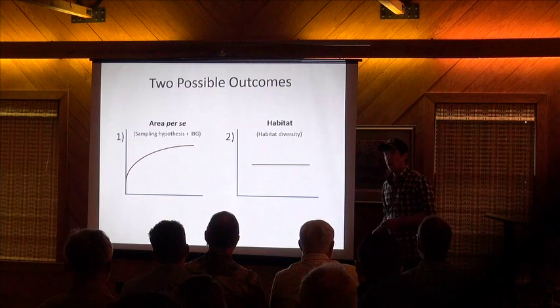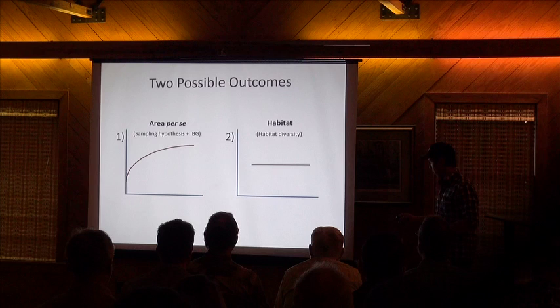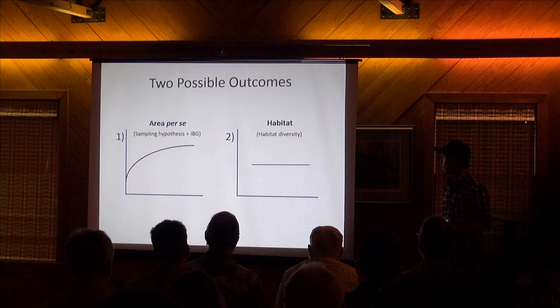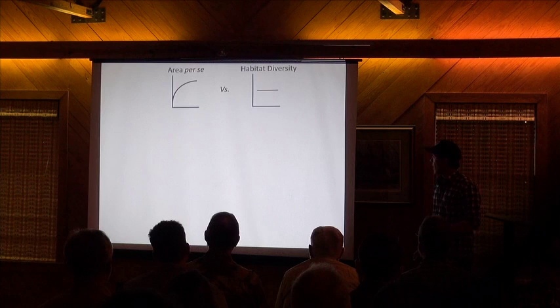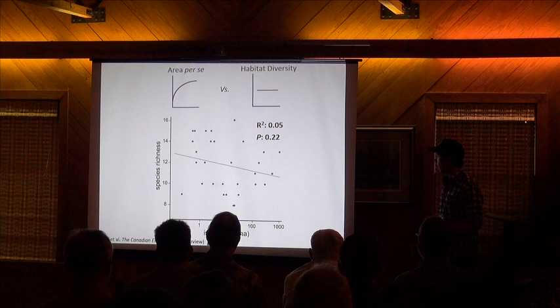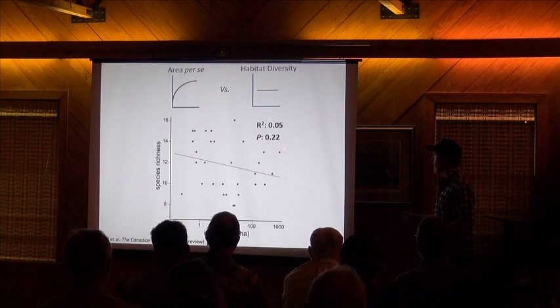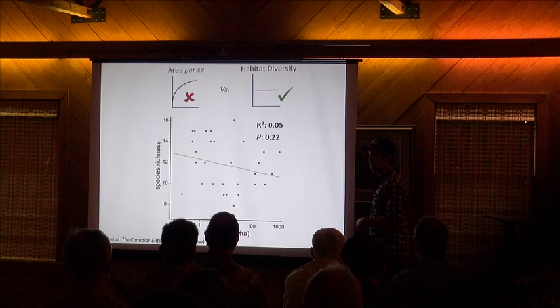Under this macro-habitat-controlling design, by sampling only upland conifer forests, we had two possible outcomes: either we still see a significant species-area relationship — in which case area per se is at least somewhat important — or we no longer see a species-area relationship, in which case habitat may be more important than area per se. What we actually find is the latter. On the x-axis is island area and on the y-axis is species richness, and you can see from the scattering of points, the non-significant p-value, and the weak r-squared that we don't actually see this relationship. This suggests that area per se may not be important, but habitat diversity may be.